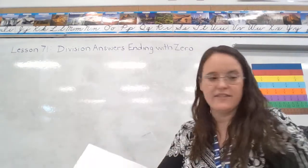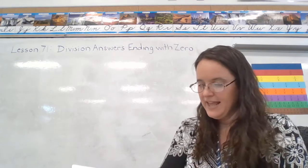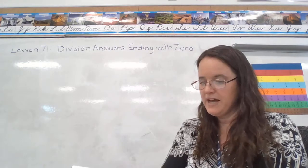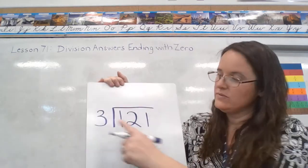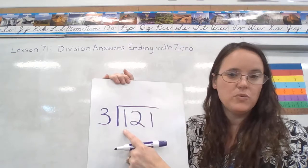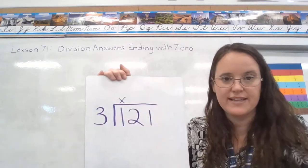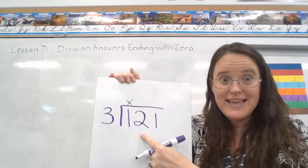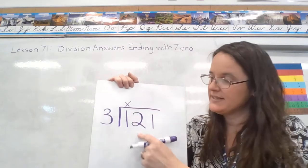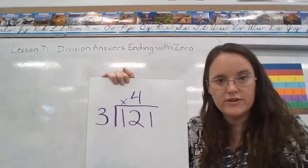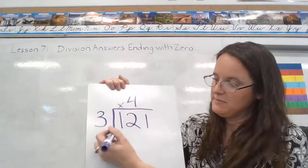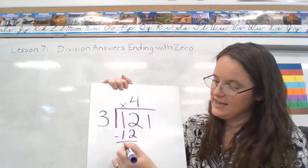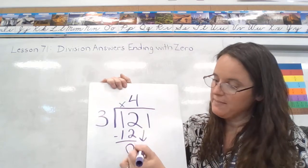All right, we're going to try that with another example. In this case, we have 121 divided by three. So can three go into one? No, it can't. We'll put our x there over the hundreds. Can three go into 12? Yes. How many times? Four times. Four times three is 12. I subtract. I get zero. And now I'm going to drop my one.